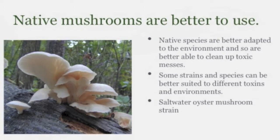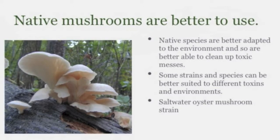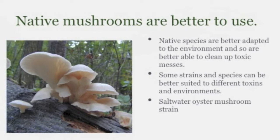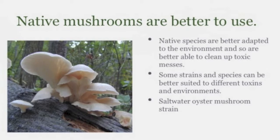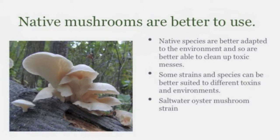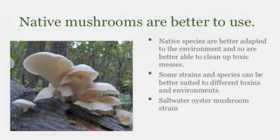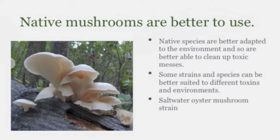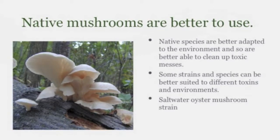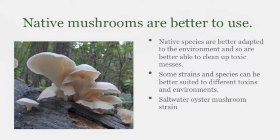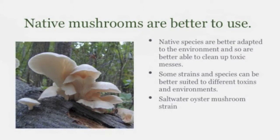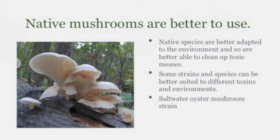Native mushrooms are better to use. Native species are better adapted to the environment and so are better able to clean up toxic messes. Some strains and species can be better suited to different toxins and environments. The saltwater oyster mushroom strand is an example of this — researchers found one strand of oil-eating oyster mushrooms that survive in saltwater environments, and the mycelium fully colonizes straw soaked with seawater. This species can be very useful in offshore oil spills.